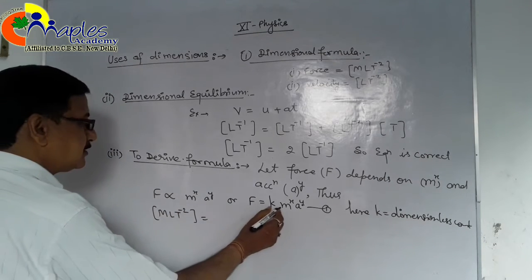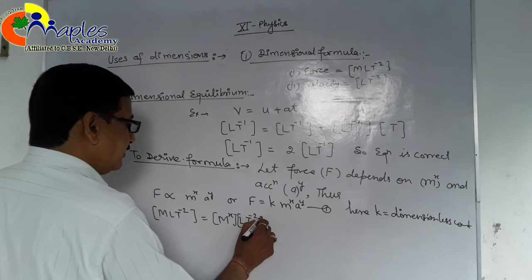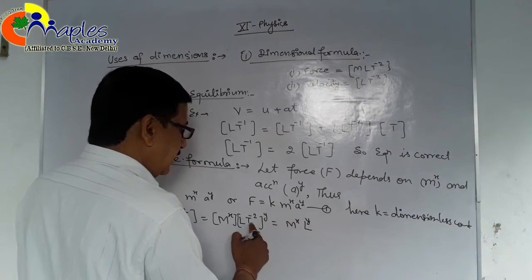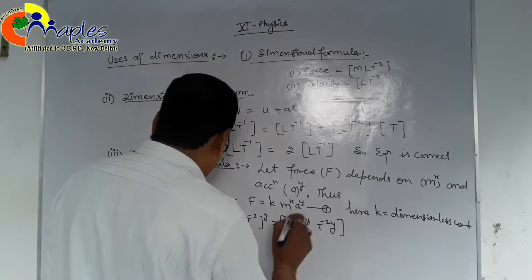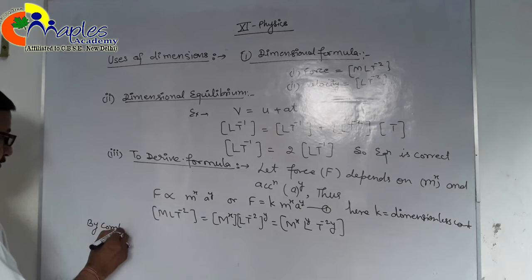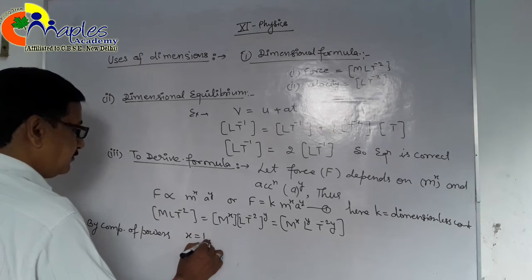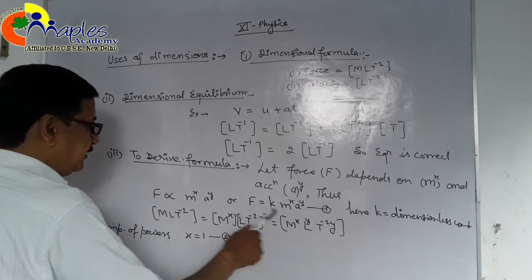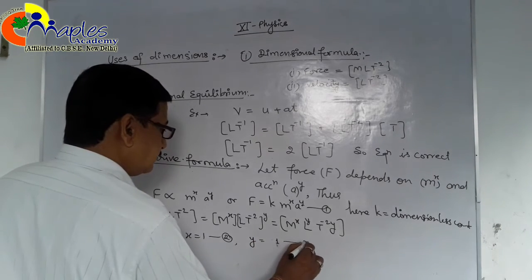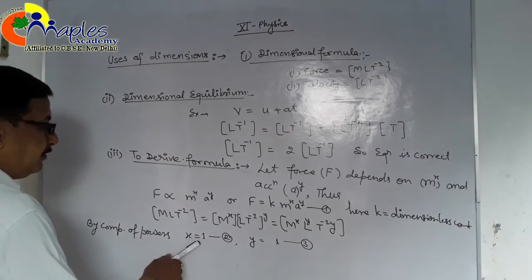We put the dimensions of all quantities into the equation: MLT⁻² = mˣ · (LT⁻²)ʸ = Mˣ · Lʸ · T⁻²ʸ. Comparing powers on both sides: for M, x = 1; for L, y = 1; for T, −2y = −2, so y = 1.